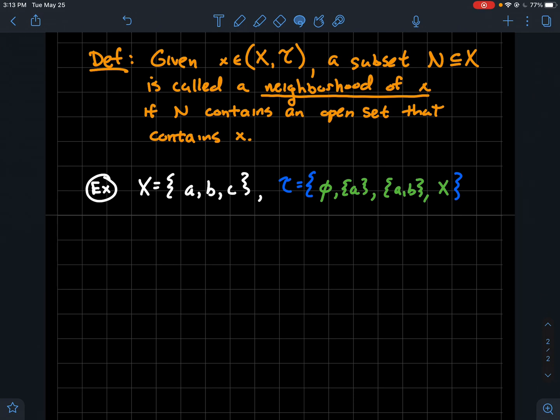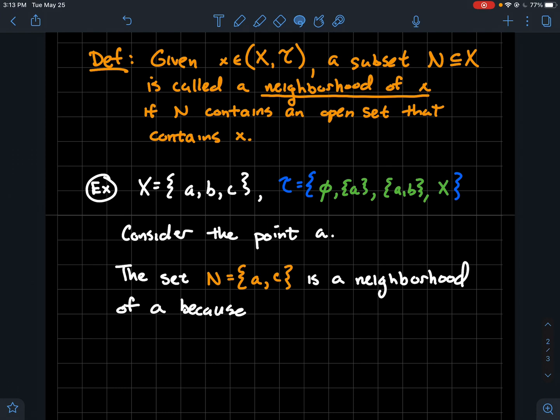So let's say I've got the same set X above and I've got this topology. So consider just the point a. So then if I took the subset of X that's just {a,c} together, that's a neighborhood of a. So why is it a neighborhood of a? Just to demonstrate what's the definition above trying to say,